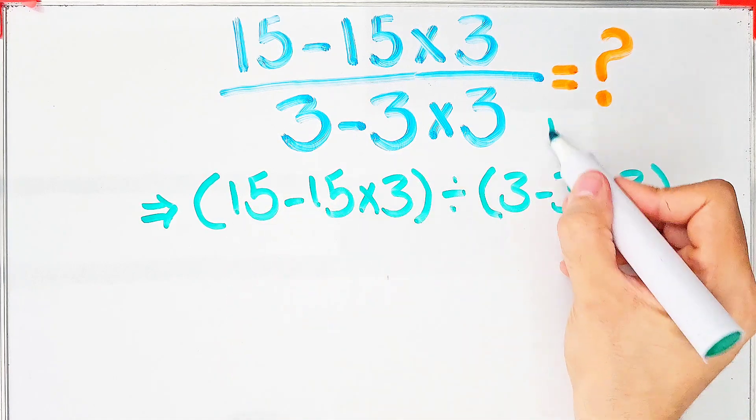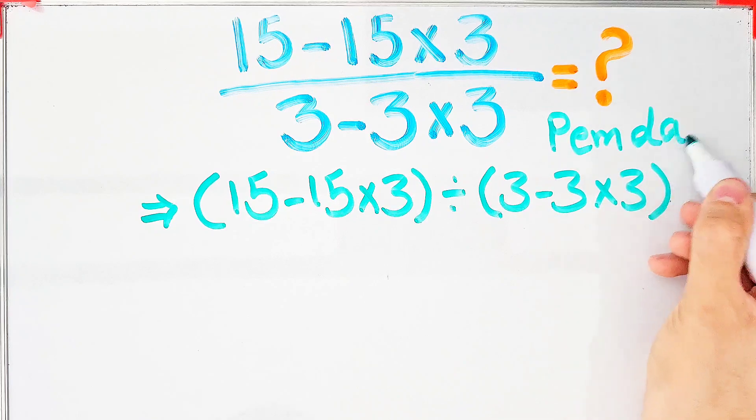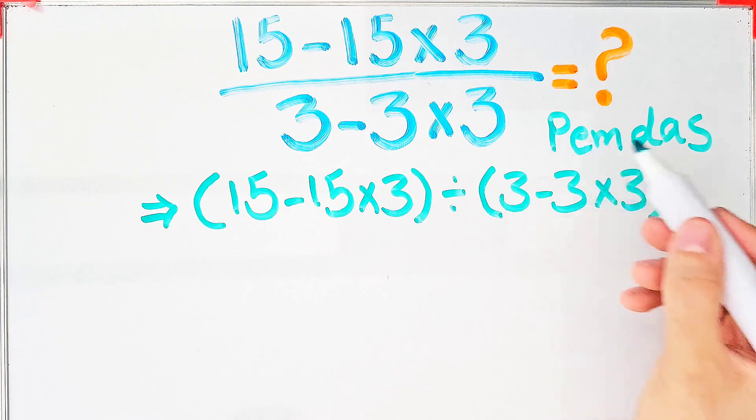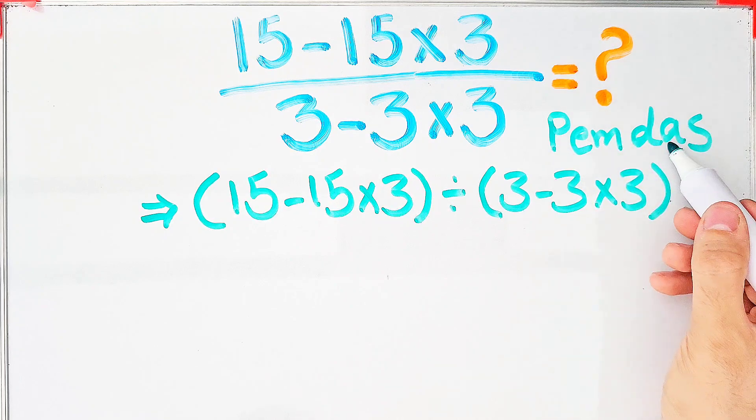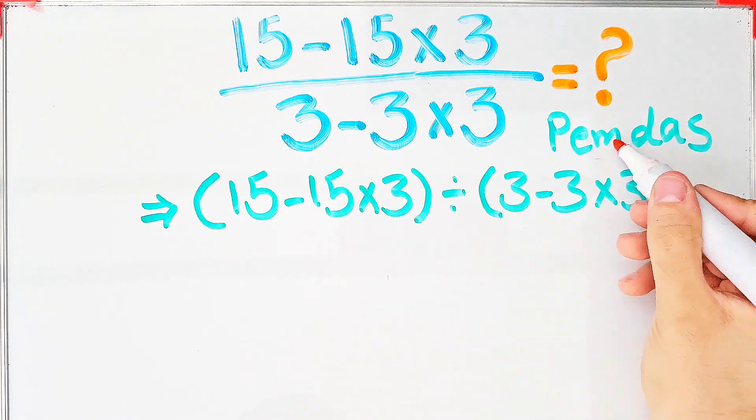To solve this question, we need to follow the order of operations, which is PEMDAS. PEMDAS shows the priority of mathematical operations. In this rule, P stands for parentheses, E stands for exponent, M stands for multiplication, D stands for division, A stands for addition, and S stands for subtraction.